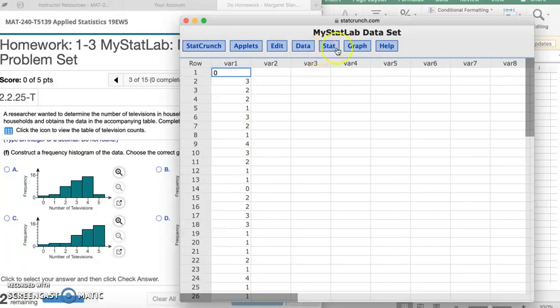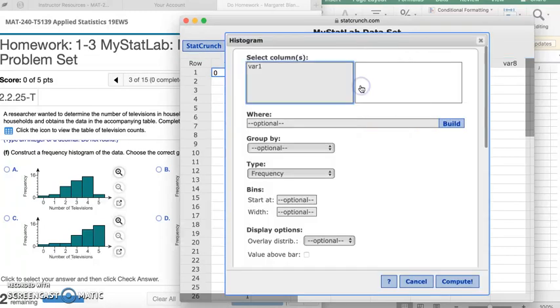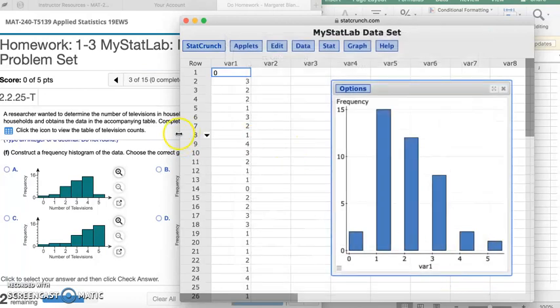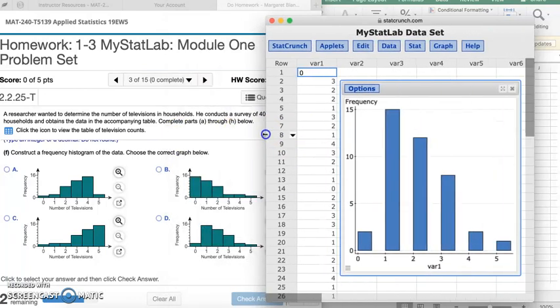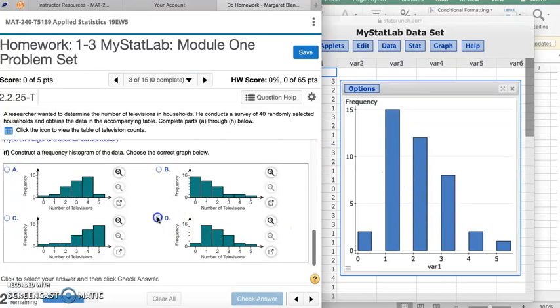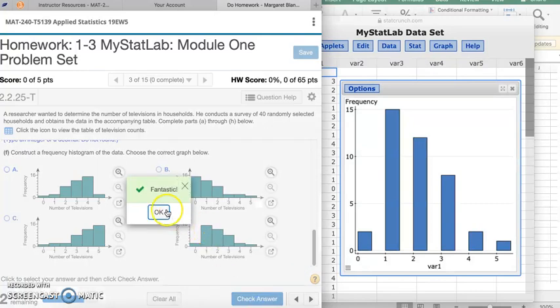So here, as you see, it opens our data set. We're going to go to Graph, Histogram, select the variable, and click Compute. We can see already that the shape of the histogram right there matches with option D, which is what we already said from just looking at our frequency distribution. Check answer. Fantastic.